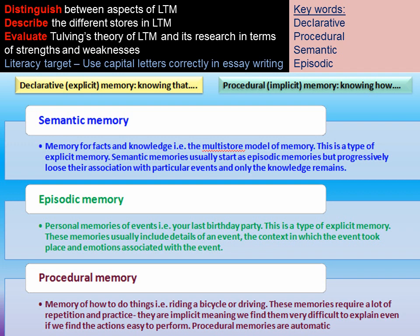Episodic memory is a personal memory of an event — your last birthday party, for example. This is a type of explicit memory, so you know that you had a birthday cake or that your mum bought you a bike. These memories include the details of the events, the context in which they are placed, and emotions associated — so you know you had your party at the pub and you were really happy when you got your bike.